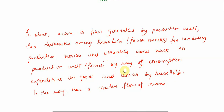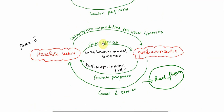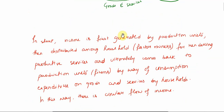So in this way there is a circular flow of income — the income keeps on flowing. I hope you understood the concept. Try to watch this at least twice to get a proper idea, and then refer to the textbook as well, where all these points are covered. It will be much more clear when you go to the textbook. Thank you.